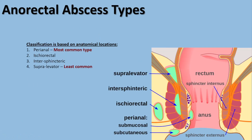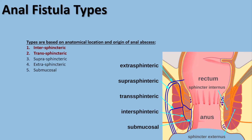The classification of anorectal abscesses and fistulas is based on anatomical location. For anal abscess, we have four types: perianal, which is the most common, including submucosal (inside the rectum) and subcutaneous (in the perianal region). We also have ischiorectal abscess, inter-sphincteric abscess (between the sphincteric muscles), and supra-levator abscess, which is the least common and occurs above the levator muscle.